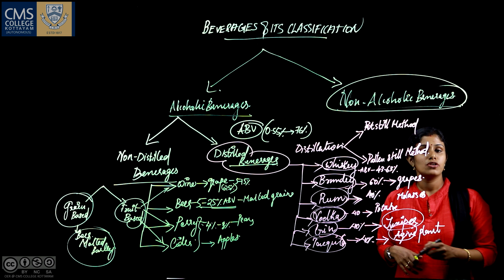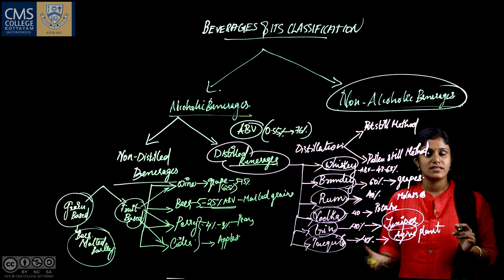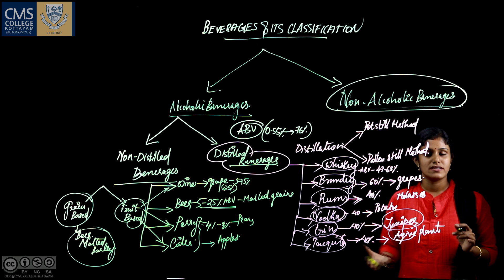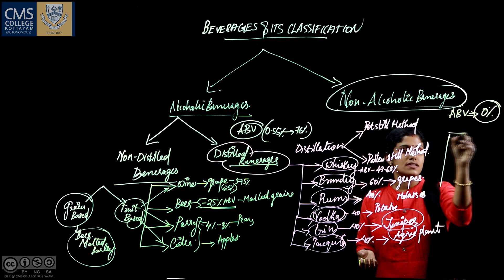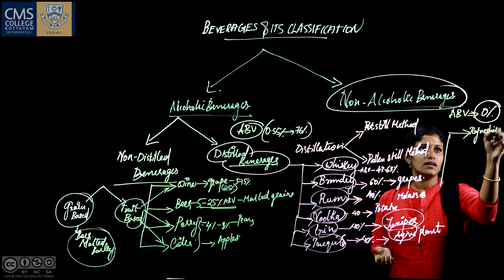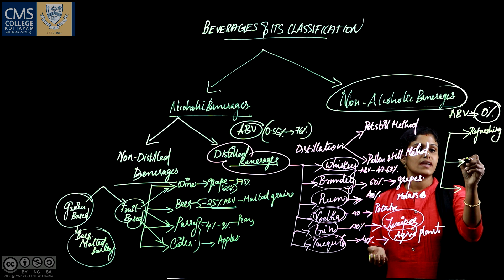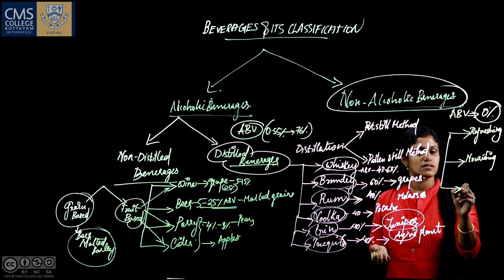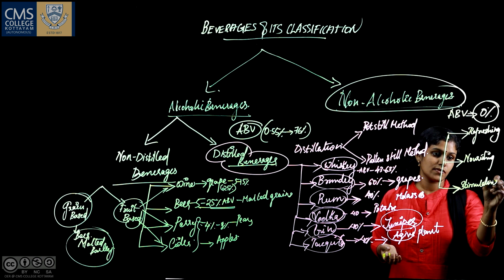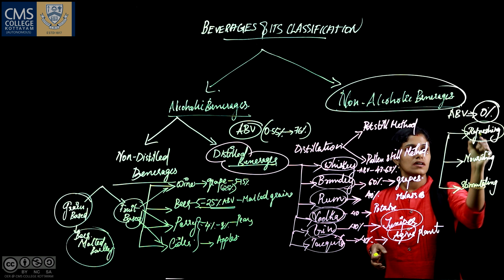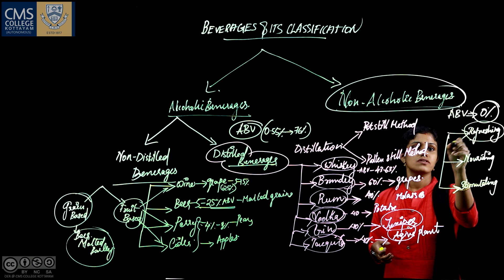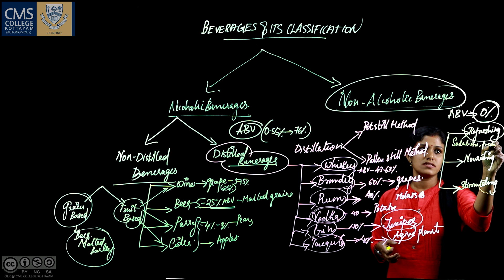Now let's see non-alcoholic beverages. Non-alcoholic beverages are beverages which are free of alcohol. The ABV value of non-alcoholic beverages is 0%. The classifications are: first, refreshing beverages — these provide a refreshing effect to the body. Examples include soda, lime, and fresh juices.